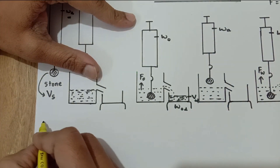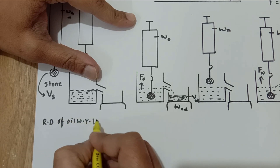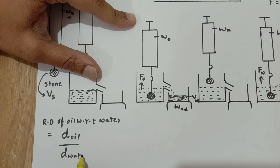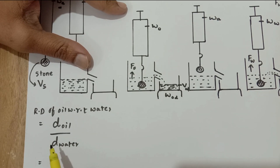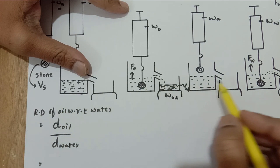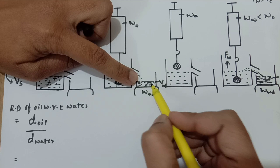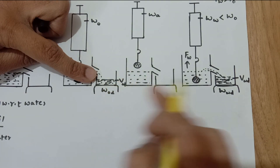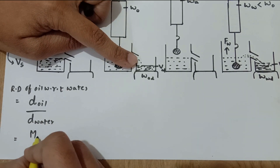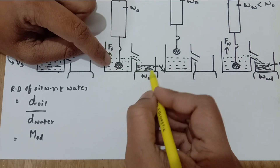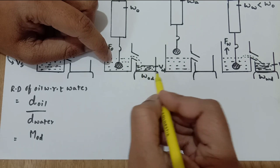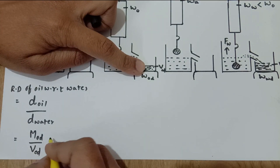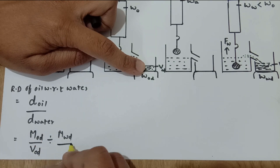Now we will write the relative density of oil with respect to water, also known as specific gravity, which equals density of oil divided by density of water. We measure this experimentally using the displaced liquids, since we know both their volumes and weights from the beaker graduations. Density of oil displaced divided by density of water displaced can be written as mass of oil displaced over volume of oil displaced, divided by mass of water displaced over volume of water displaced.